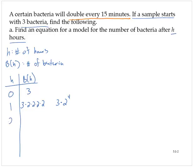After two hours, there would be a total of eight doubling times, so we'd have three times two to the eighth. And after three hours, there would be three times two to the twelfth, since in three hours there would be 12 doubling times.